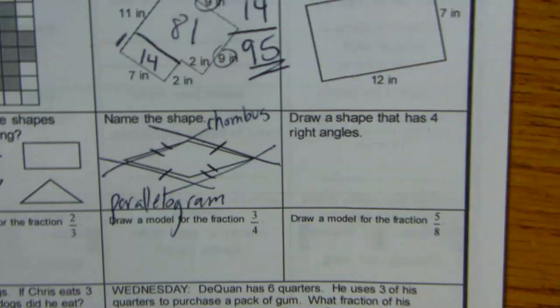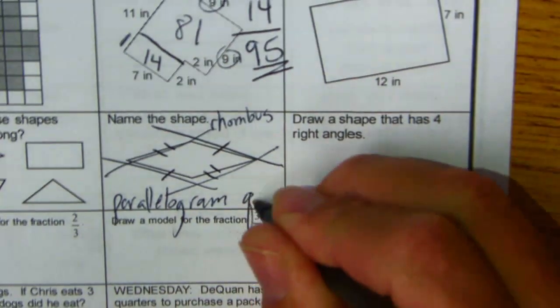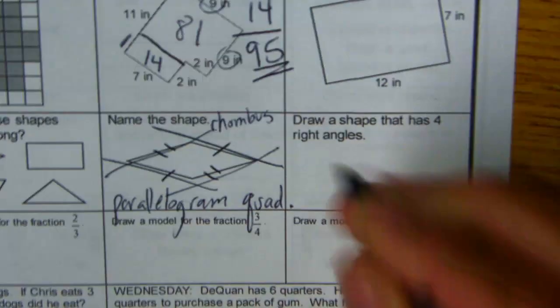Remember, polygon: straight sides, closed shape. A polygon has straight sides and it's a closed shape.